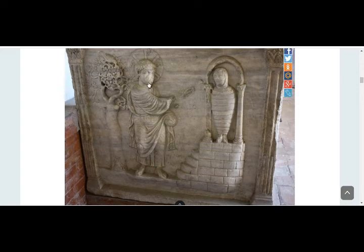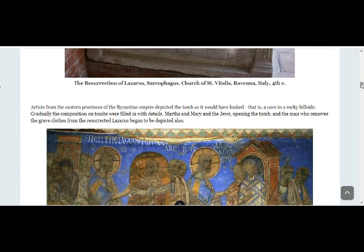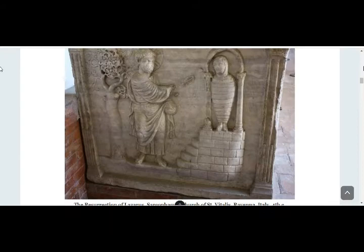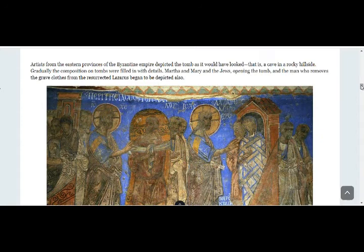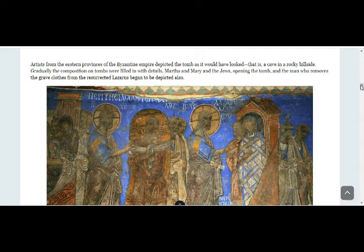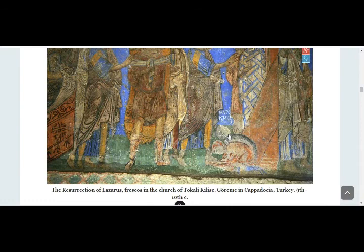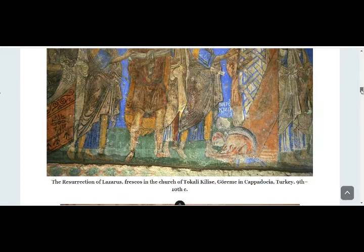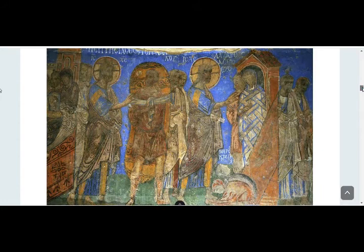Here Jesus appears to have some kind of a beard, though it's somewhat worn off. There's Lazarus still bound up. This is at the Church of St. Vitale, Ravenna, Italy — again, fourth century. And then we have artists from the eastern province of the Byzantine Empire. This is Greek writing — 'Anastasi Lazaro,' the resurrection of Lazarus — and this is set in a cave in a rocky hillside. Gradually the compositions were filled with details: Martha, Mary, and the Jews opening the tomb, and the man who removes the grave cloth from the resurrected Lazarus. There are the two sisters. It's a fresco in the Church of Tokali Kilise in what is today Cappadocia, Turkey, supposed to be 9th or 10th century.